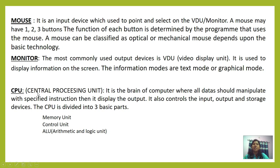Then the CPU part. CPU means Central Processing Unit. It is the brain of the computer where all data is manipulated with specified instructions. It displays the output and also controls the input, output, and storage devices. The CPU is divided into three basic parts: Memory Unit, Control Unit, and Arithmetic and Logic Unit.